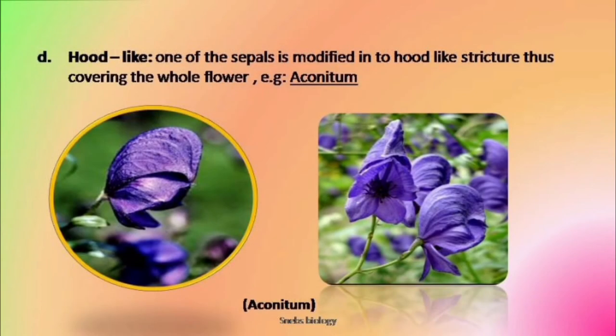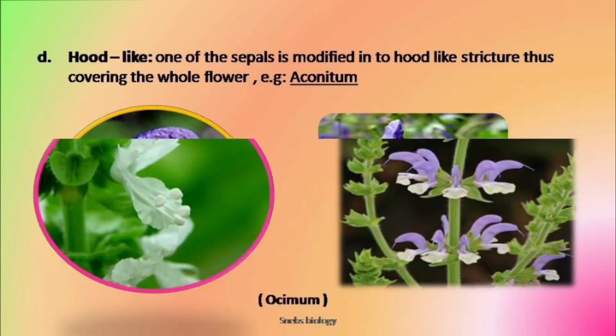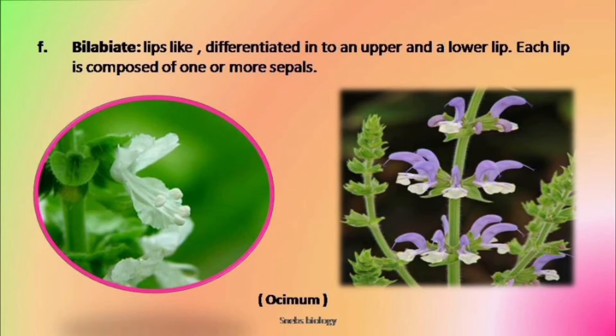Sometimes, the sepals are modified into a hood-like structure that covers the whole flower, which is seen in case of Aconitum. Next, in the family Lamiaceae, the calyx is bilabiate — that is, it is differentiated into an upper and a lower lip. Each lip is composed of one or more sepals. For example, Ocimum — here there is one sepal in the upper lip and four in the lower lip.